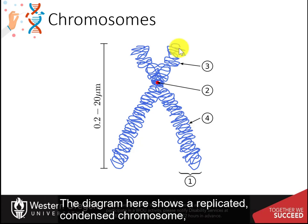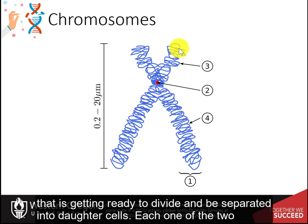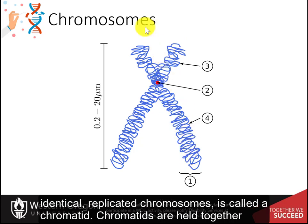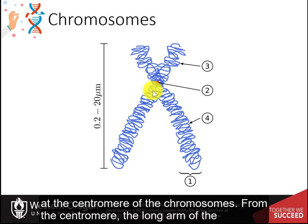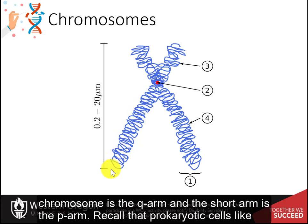The diagram here shows a replicated condensed chromosome that is getting ready to divide and be separated into daughter cells. Each one of the two identical replicated chromosomes is called a chromatid. Chromatids are held together at the centromere of the chromosomes. From the centromere, the long arm of the chromosome is the Q arm, and the short arm is the P arm.